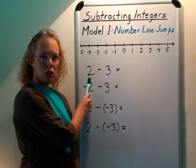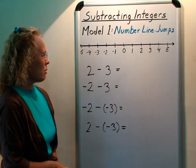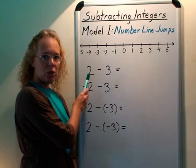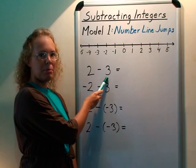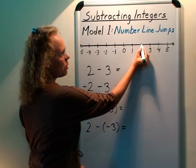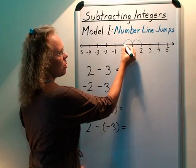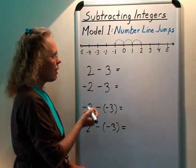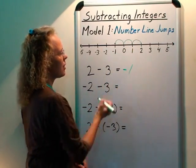And my first problem is 2 minus 3. And we can see this as starting at 2 and then you take three steps to the left. So you're at 2 and then 1, 2, 3 steps to the left and you land at minus 1. So that's the answer.